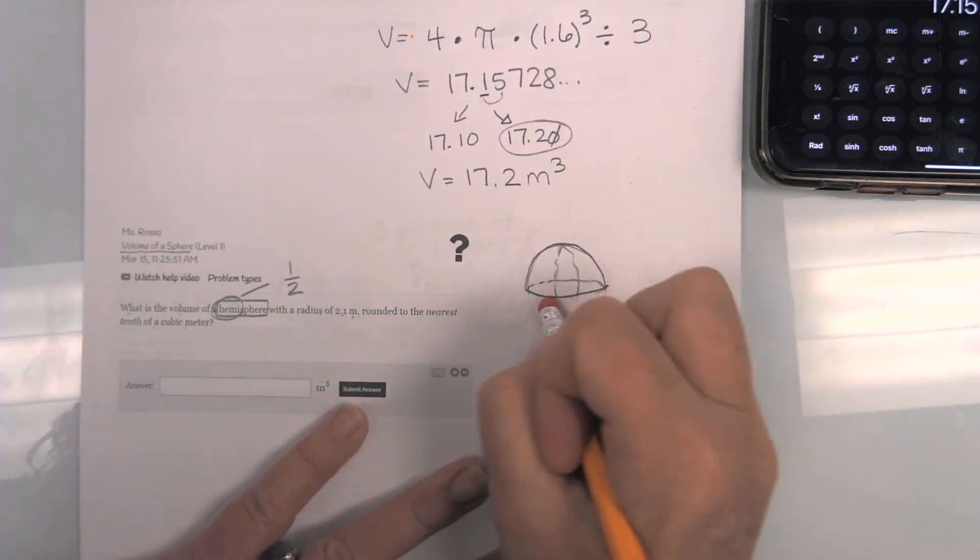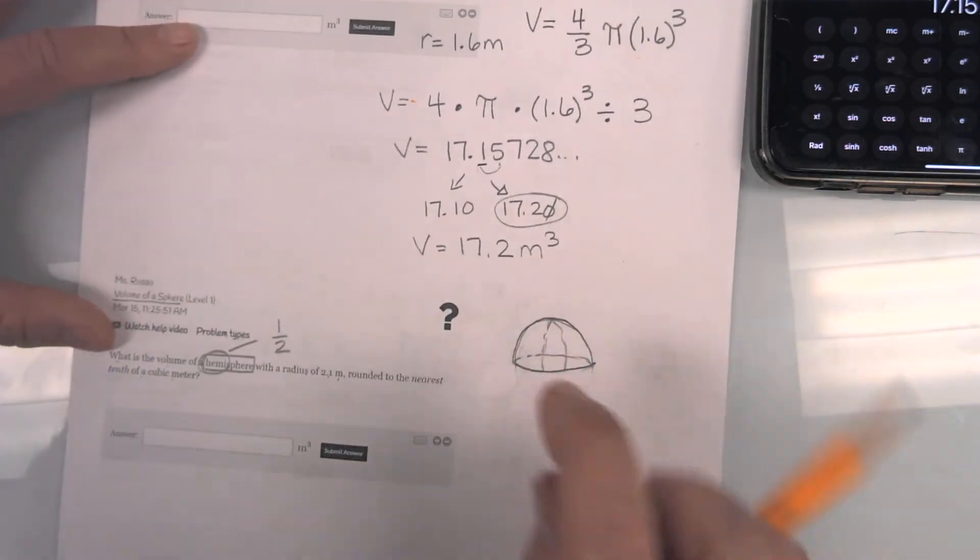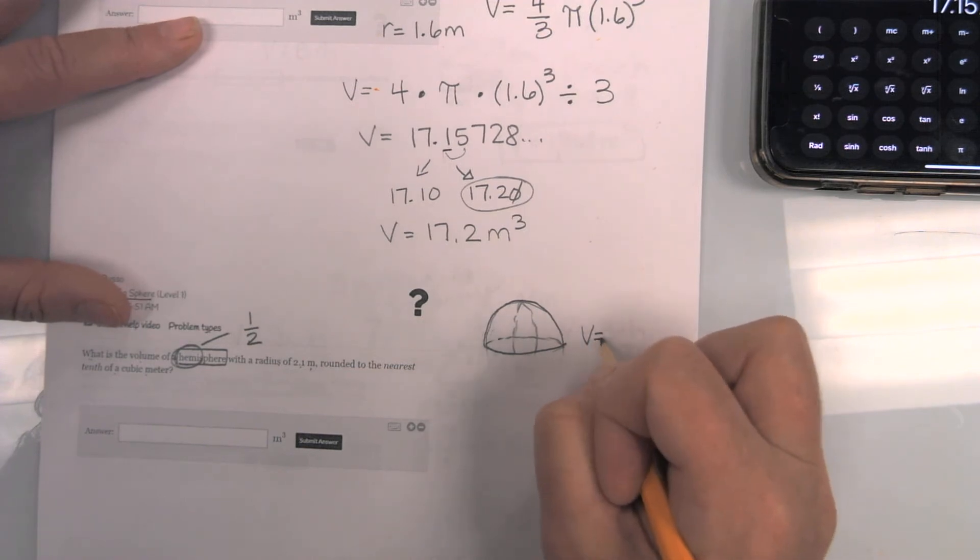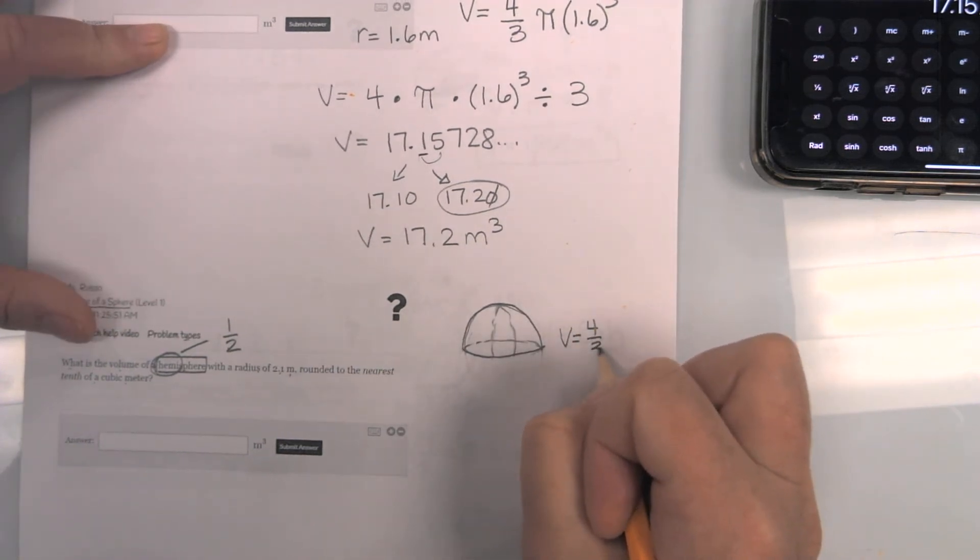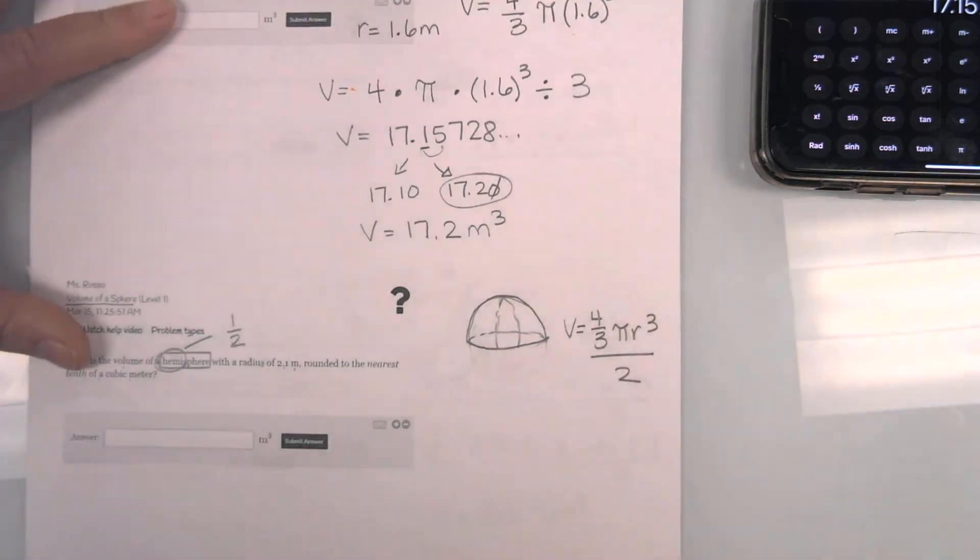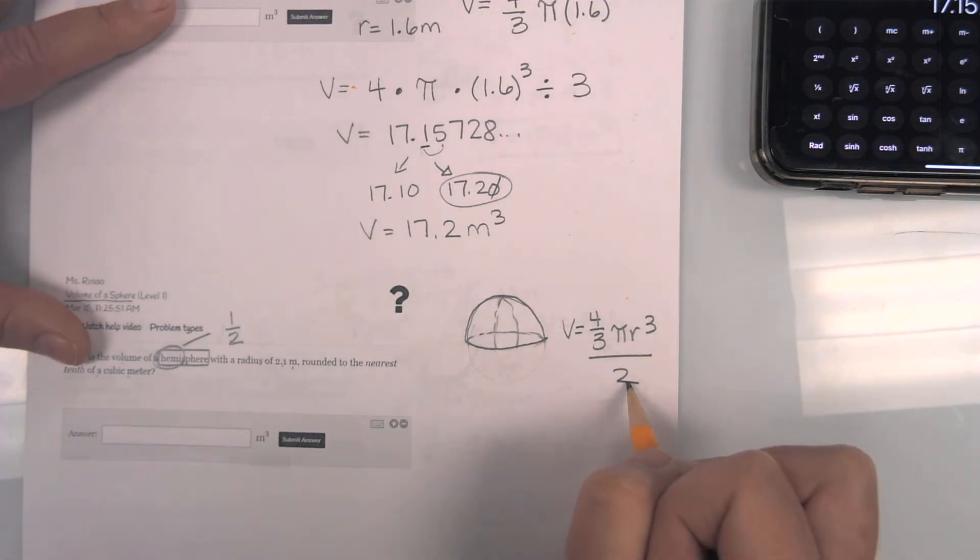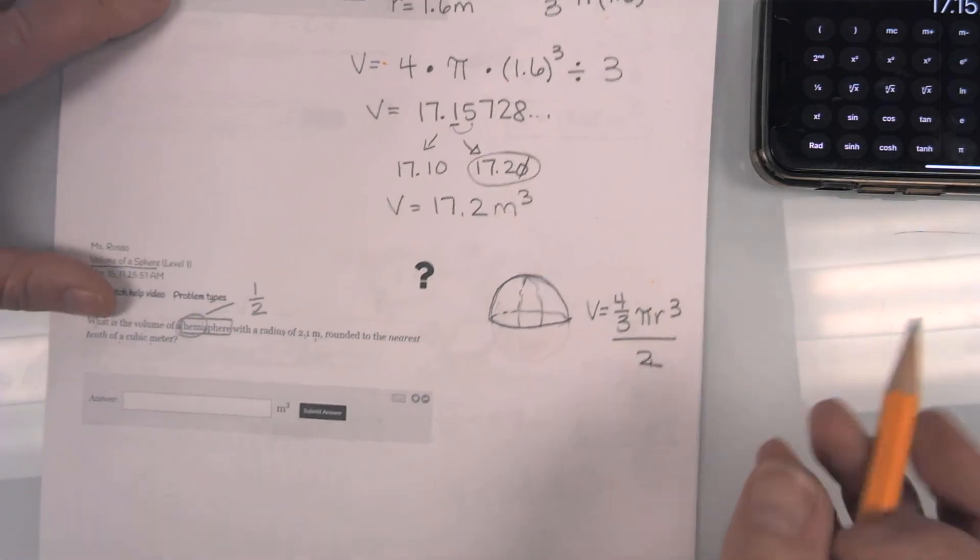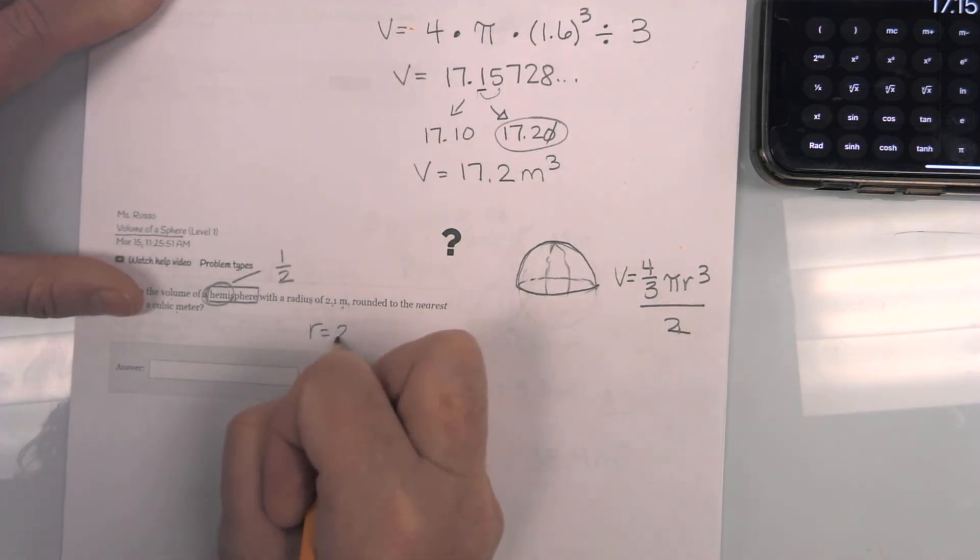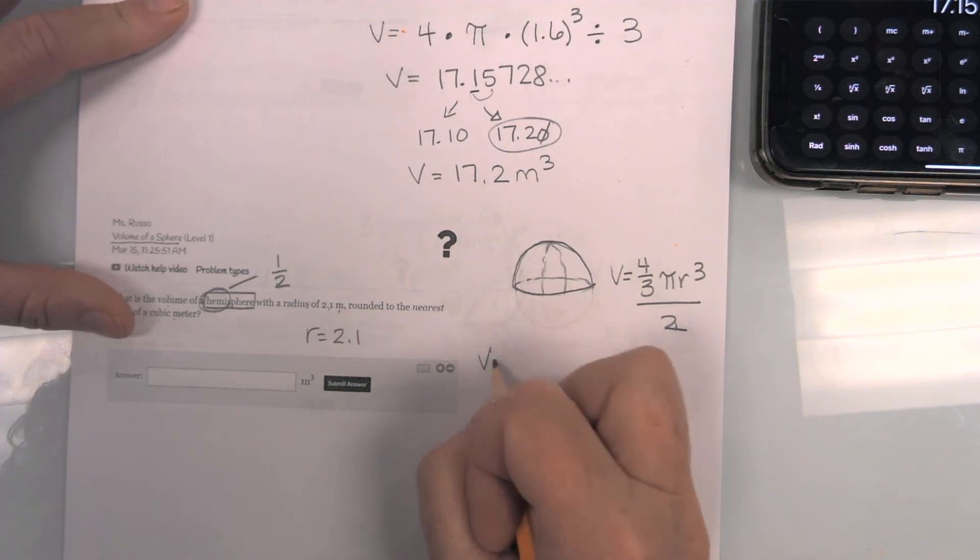So I'm only going to find half of it. Now, to find half of it, I really am going to use the same formula. So remember, we have volume equals four-thirds pi r cubed, but then I'm going to divide by two. Because I'm going to find the whole sphere, and then I'm only going to take half of it. So I will divide by two. Now, what's really cool about this one is they told us the radius is 2.1. That's exactly what we need. So here we go.